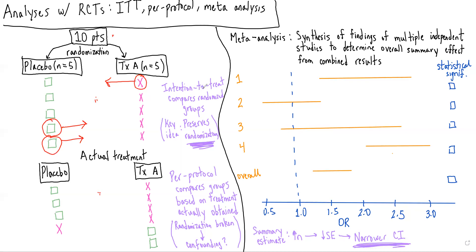An intention-to-treat analysis, kind of as the name implies, compares the randomized groups. That would compare these green squares versus these pink X's. And really, the benefit of intention-to-treat analyses is that because we're comparing the groups as they were originally randomized, we're preserving the randomization.